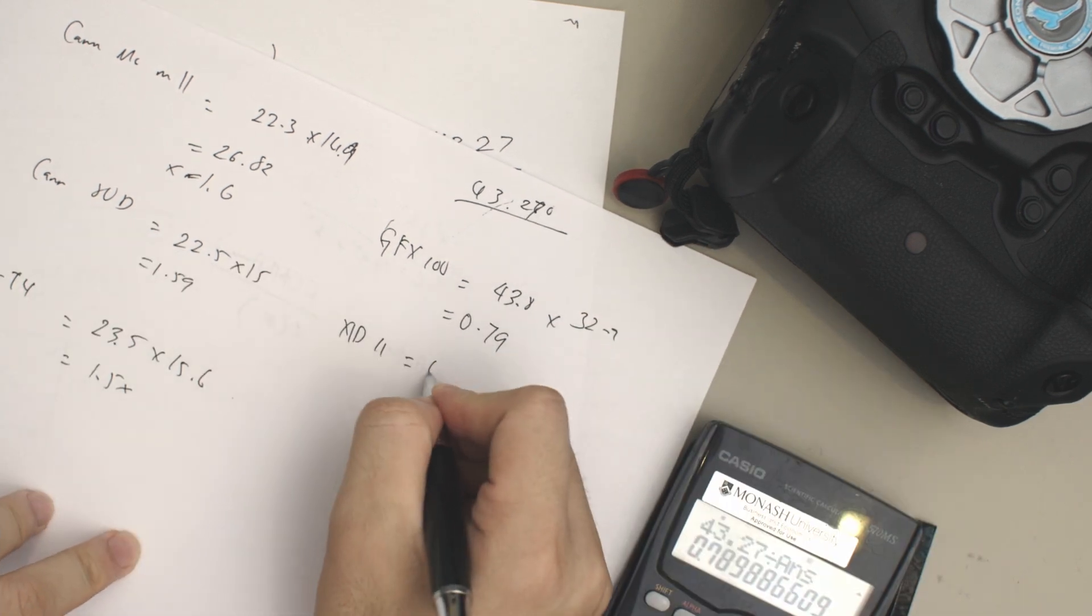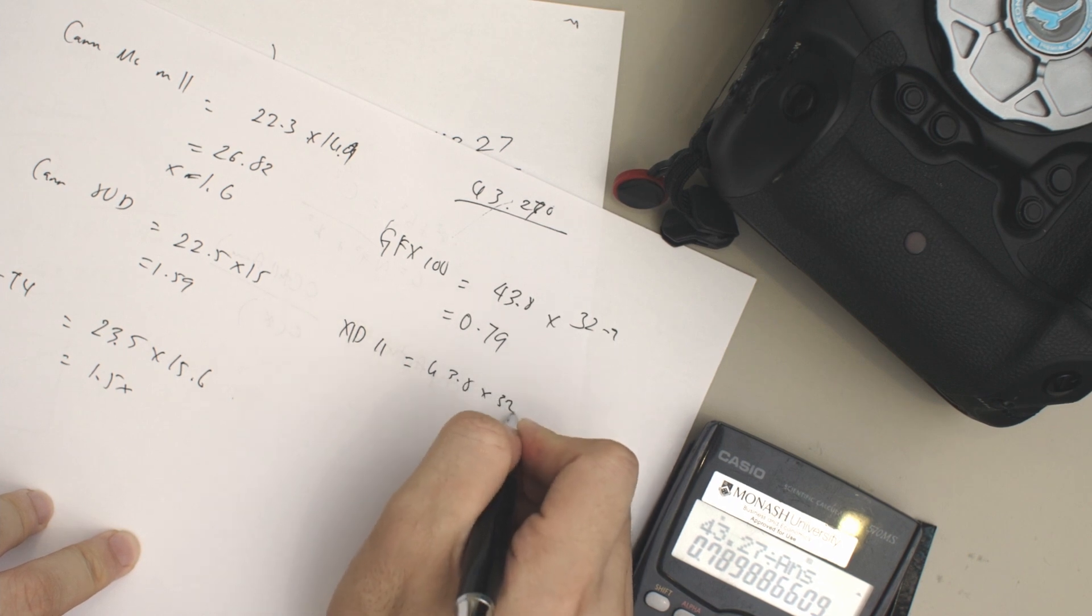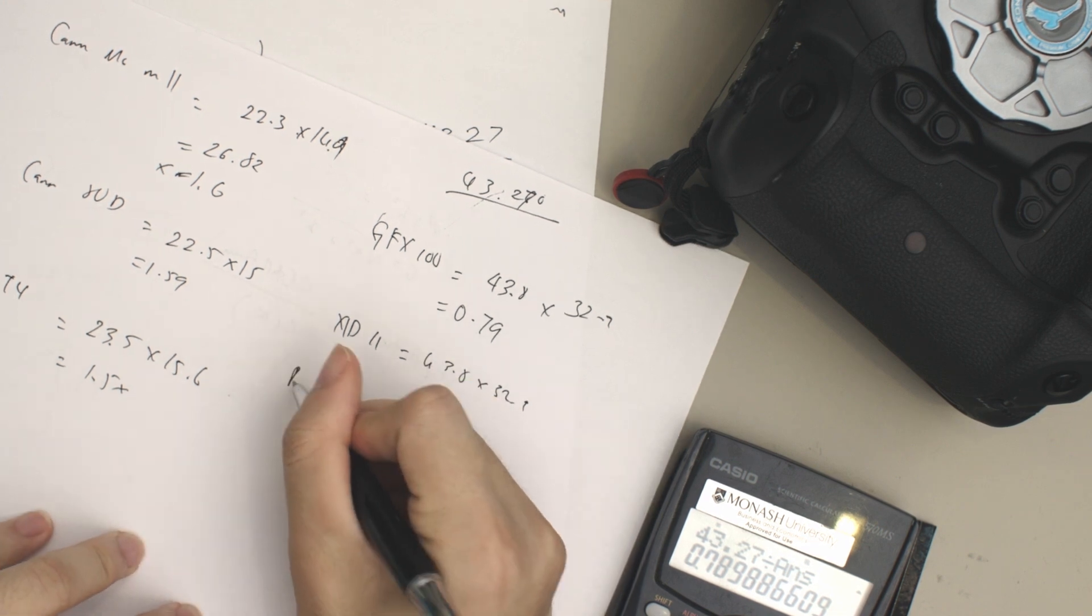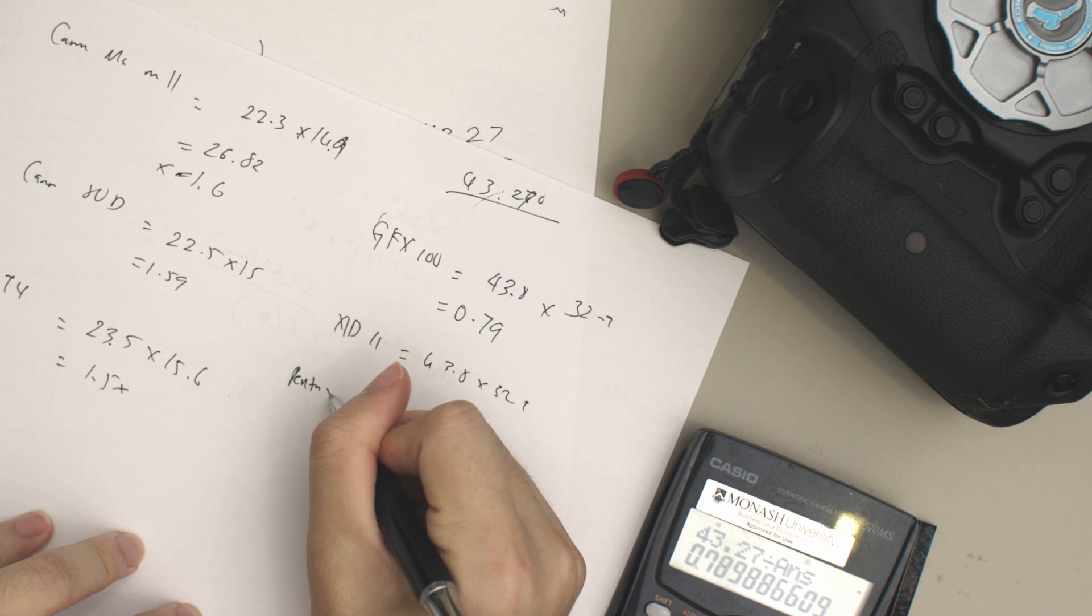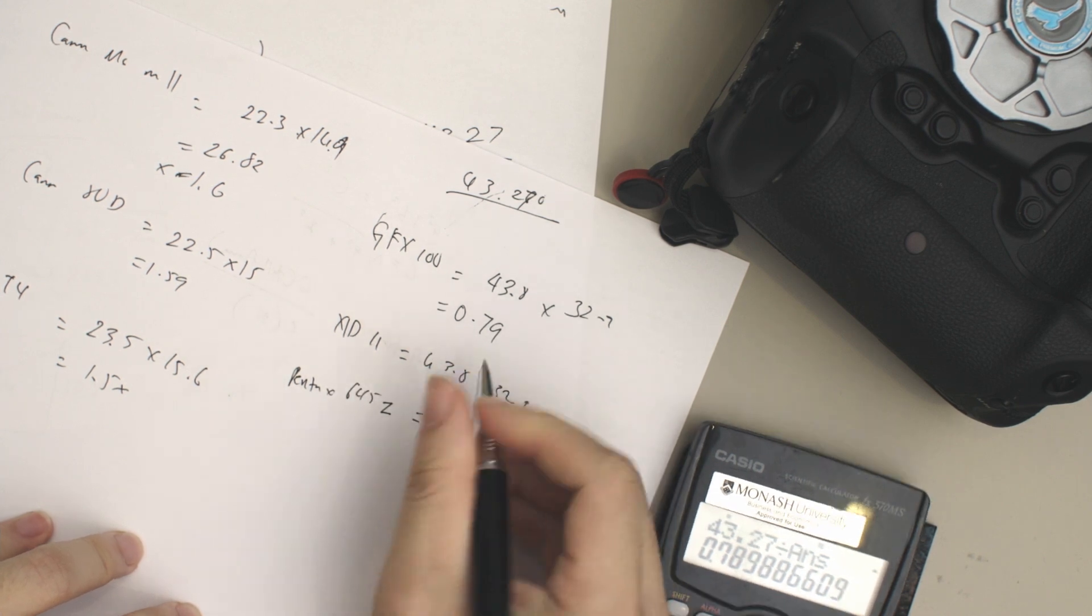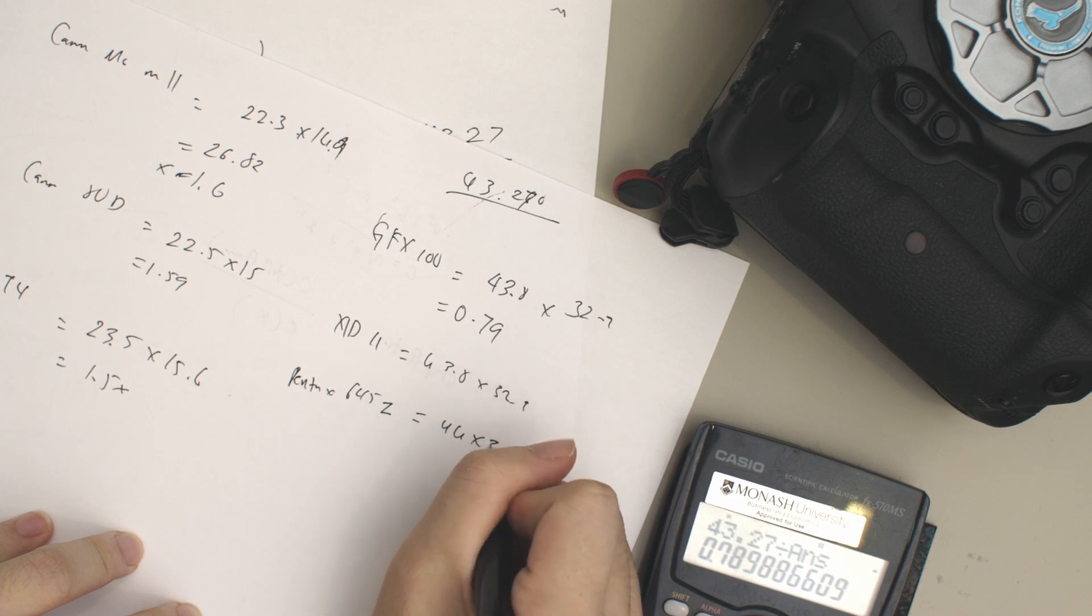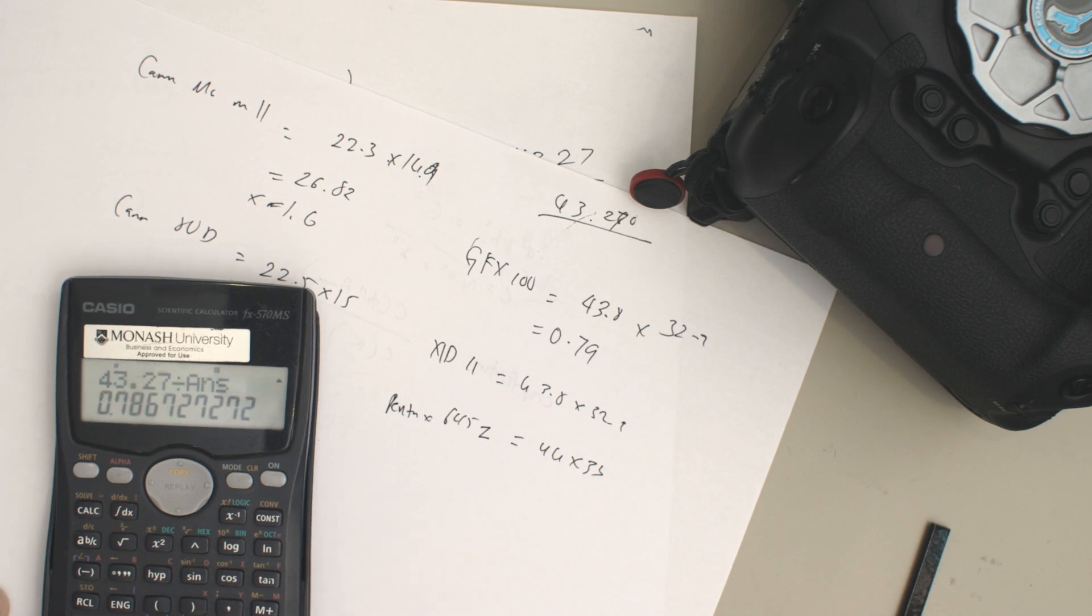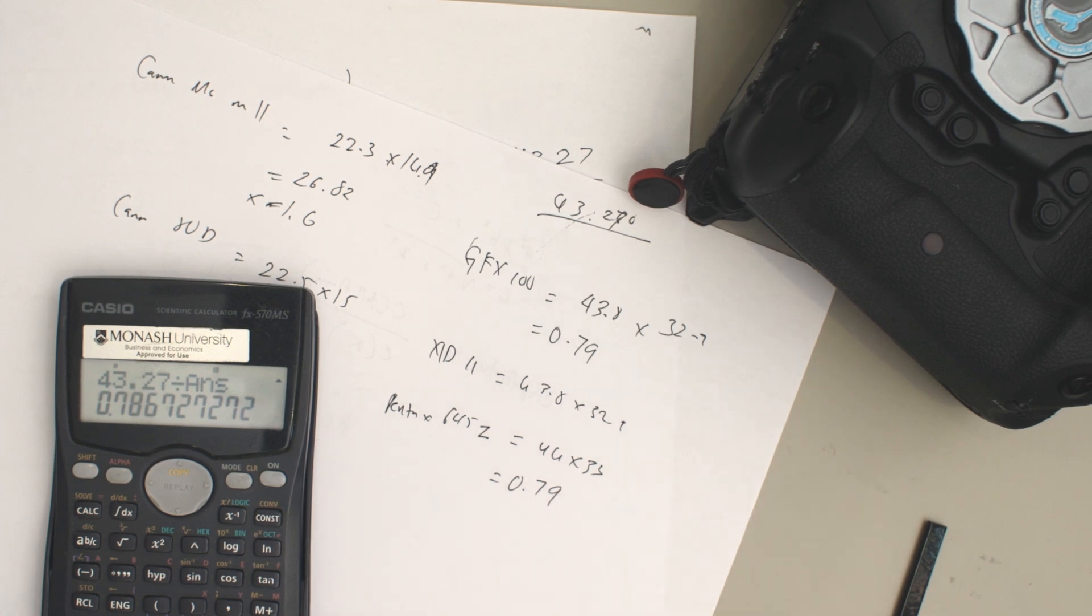The Hasselblad X1D-II also has the same dimensions as the medium format for Fuji, but let's look at another one, which is the Pentax 645z. If I'm not mistaken, this has a value of 44 by 33.55, and 43.27 divided by that answer gives you a crop factor of 0.9.